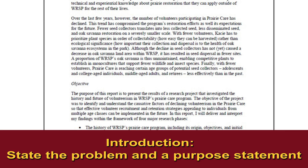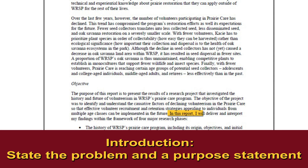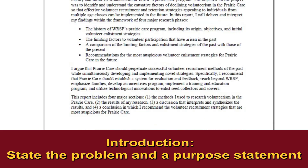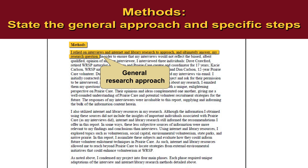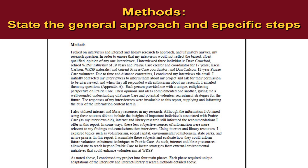After the specific subject is identified, the author states the problem being researched and the purpose of the study. You can also include a forecast of the report's organization. The methods section follows the introduction. This section describes the steps that were used to obtain the information. By explaining the general research approach and the specific steps you used, you allow your readers to assess the reliability of the results and to design a similar project.